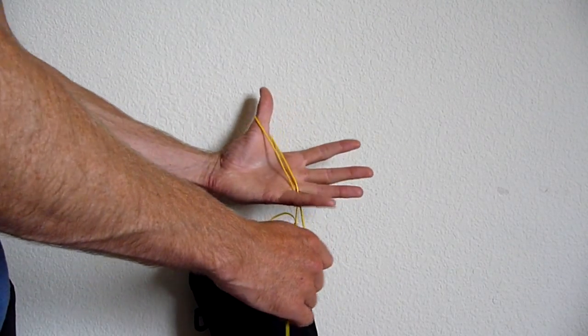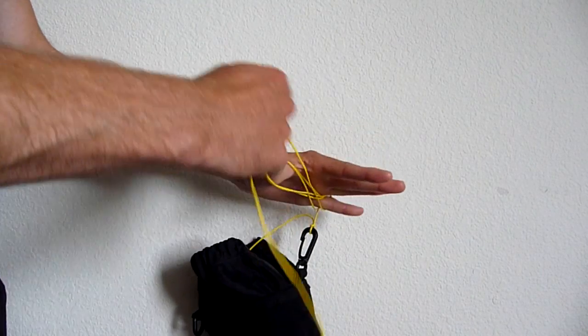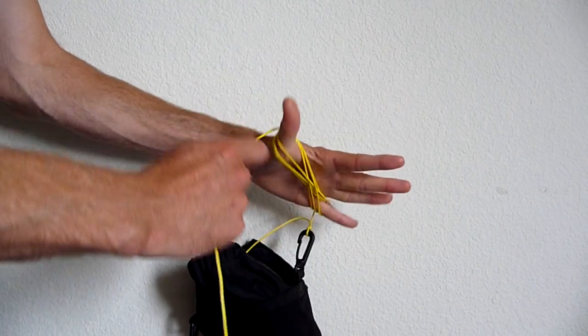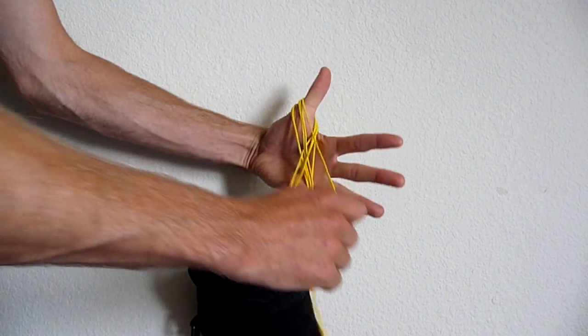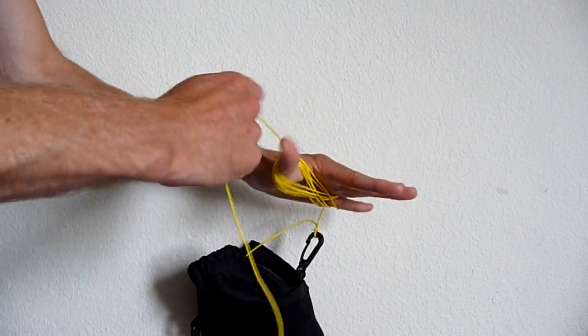To coil it, I use a figure eight around my pinky and thumb. I work a lot with both hands. That really increases the speed.